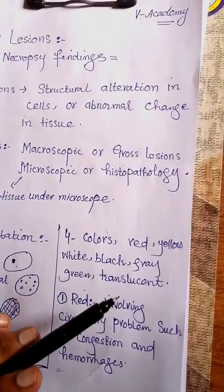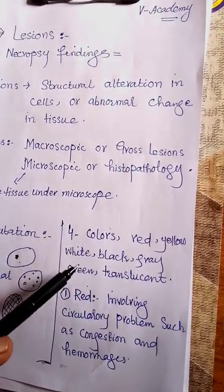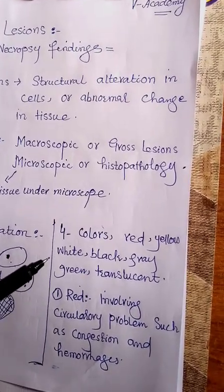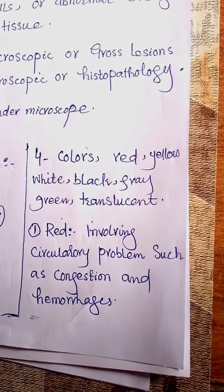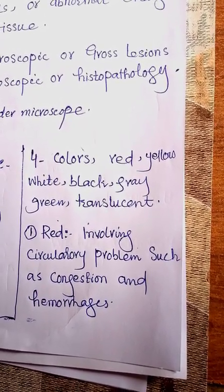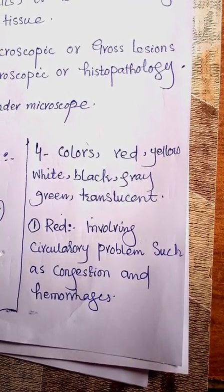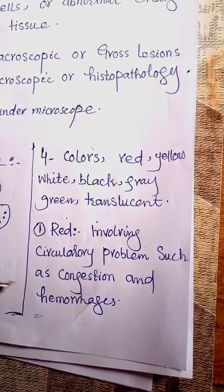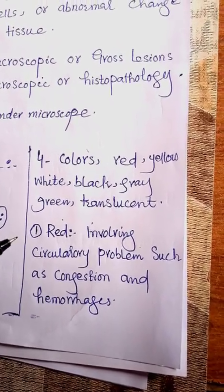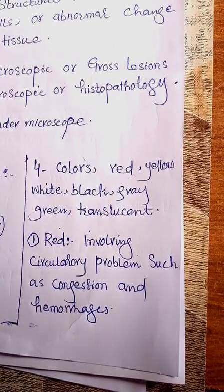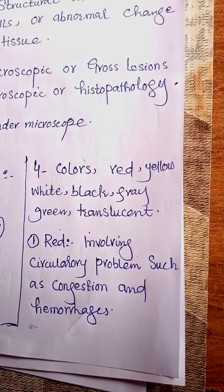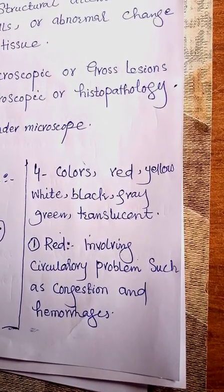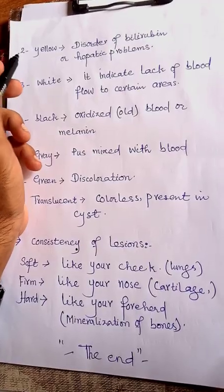Lesions can appear in different colors: red, yellow, white, black, gray, green, and translucent. If you observe red color, it indicates circulatory problems, hemorrhages, or congestion - these will present as red color. White color indicates a certain area has reduced blood flow - a lack of blood supply to that region.